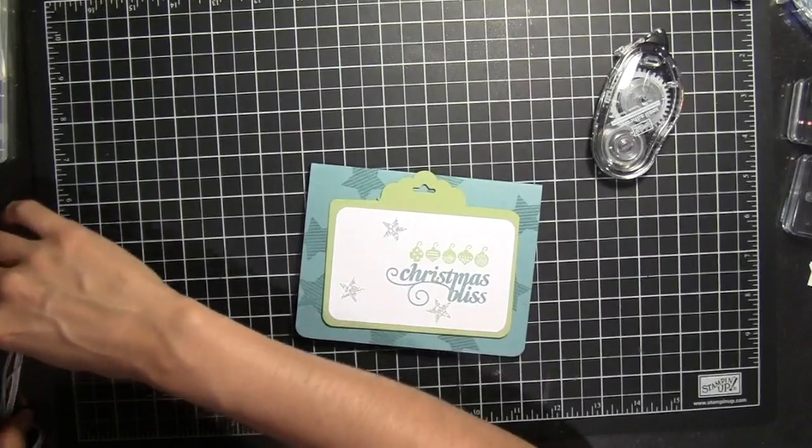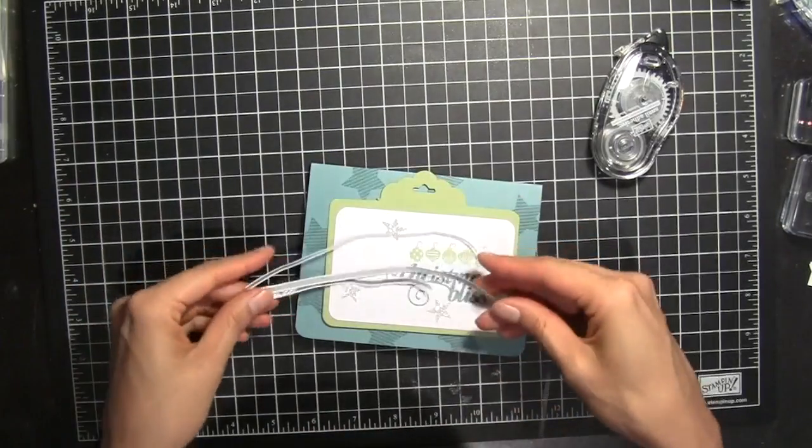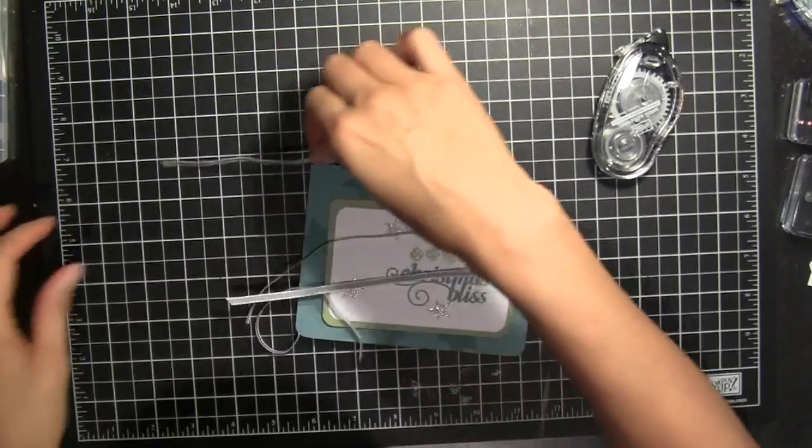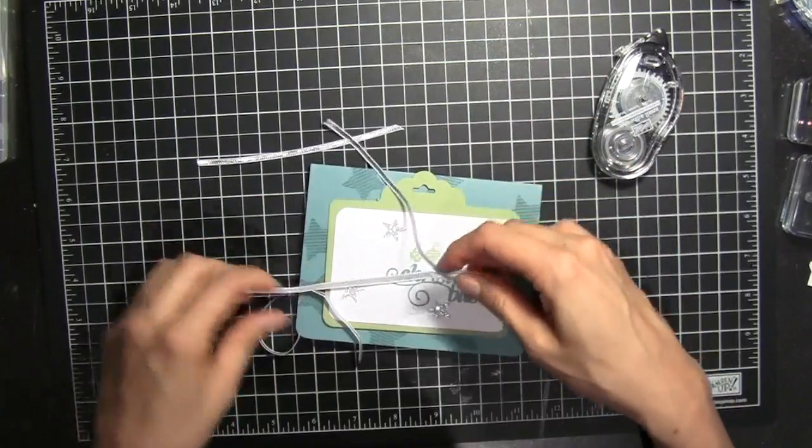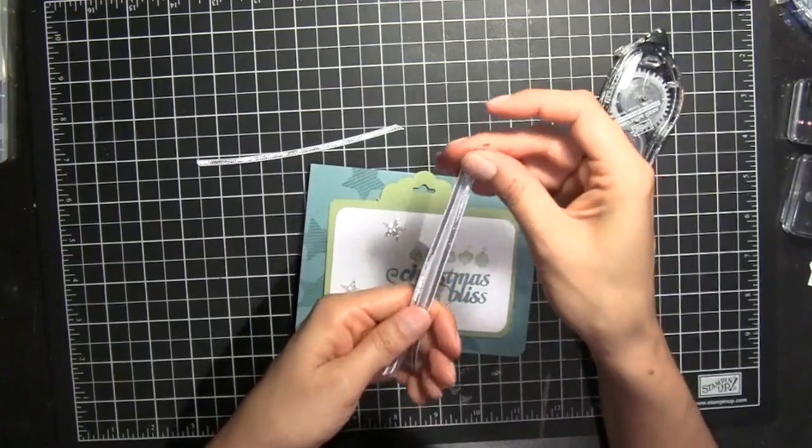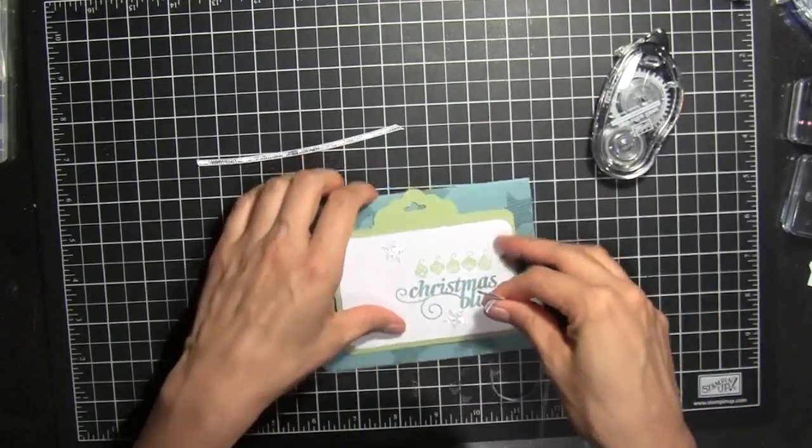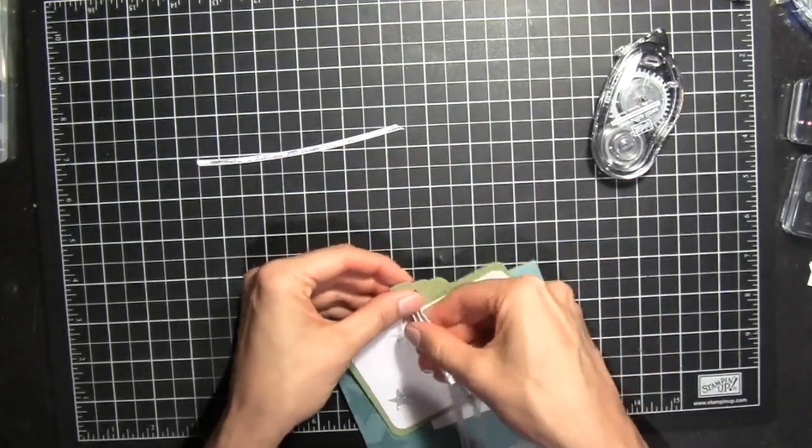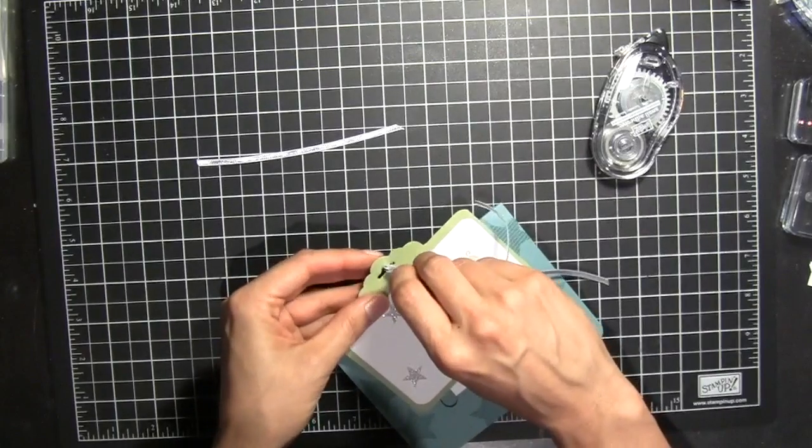And then for fun I've got some ribbon cut out. So I have four pieces of ribbon. I have two of the silver ribbon and I have one of the smoky slate ribbon. And I'm just going to slide that through the top here. All three pieces.